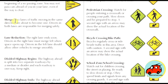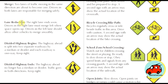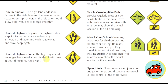A merge sign means two lanes of traffic moving in the same direction are about to become one — drivers in both lanes are responsible for merging safely. Lane reduction means the right lane ends soon; drivers in the right lane must merge left when space opens up, and drivers in the left lane should allow vehicles to merge smoothly. Divided highway begins means the highway ahead is split into two separate roads by a median or divider — each roadway is one way, so keep right. Divided highway ends means there is no longer a median or divider, traffic goes in both directions, so keep right.